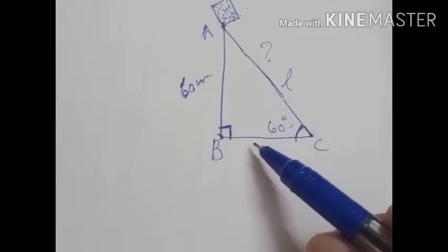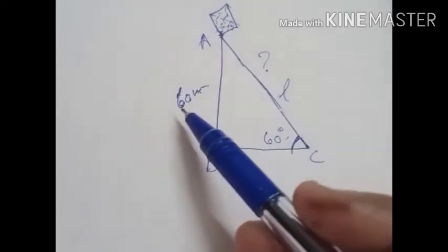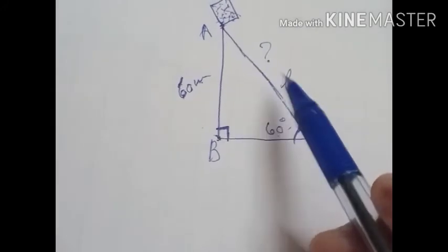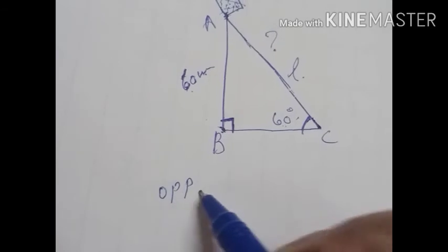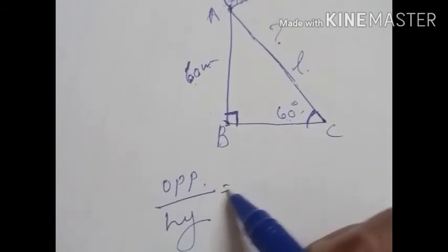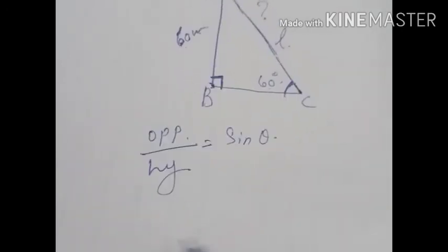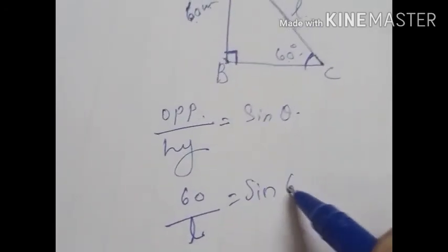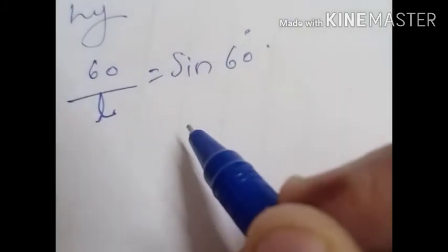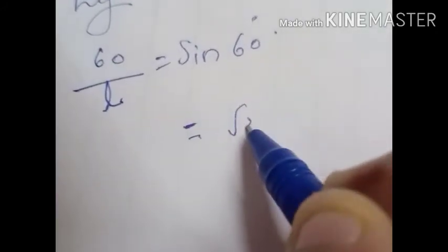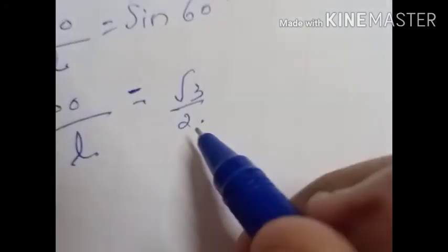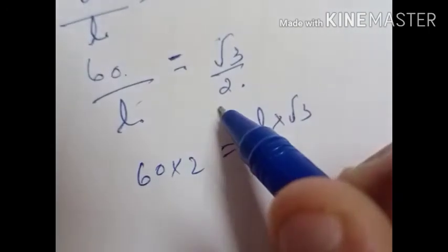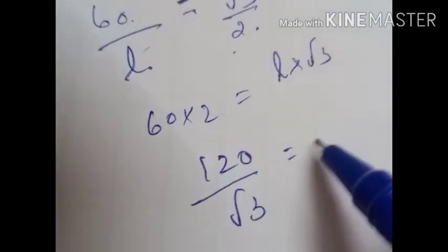We can take the trigonometric ratio opposite by hypotenuse, which equals sin theta. Here the opposite is 60 and the hypotenuse is L. Sin theta is sin 60. The value of sin 60 is root 3 by 2. So 60 by L equals root 3 by 2. Transposing, L root 3 equals 60 into 2, which gives 120 by root 3 equals L.